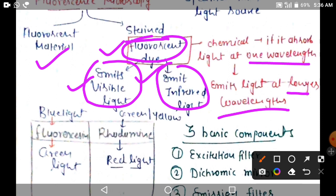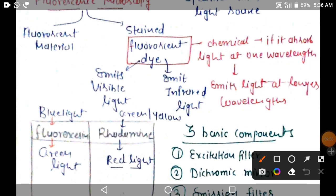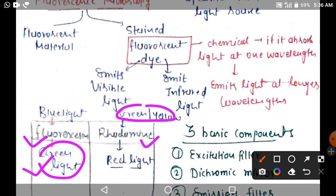Which types of dyes are useful for fluorescence microscopy? The first important example is fluororesin and rhodamine. With fluororesin, when blue light falls on it, we get green light emission. When green light is used, we get red light emission.